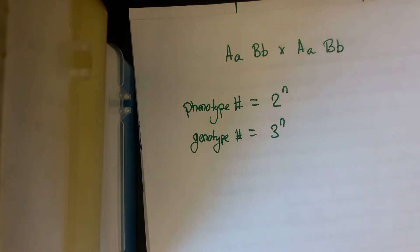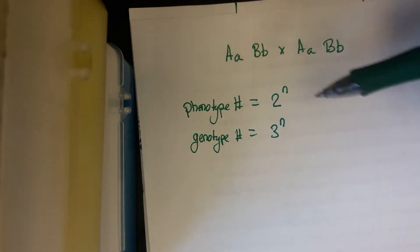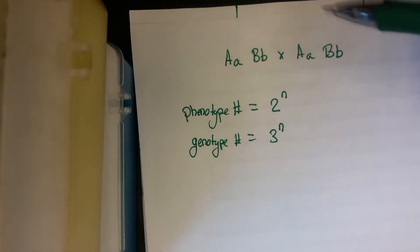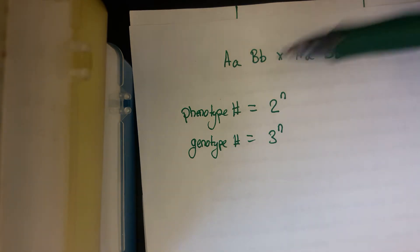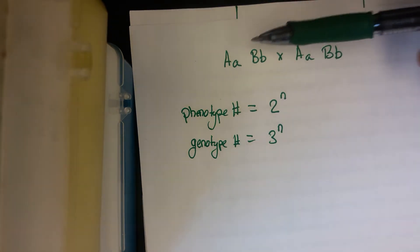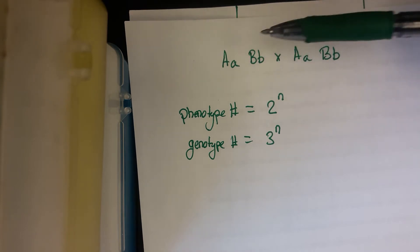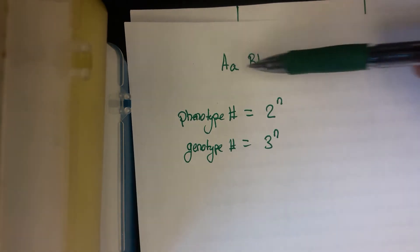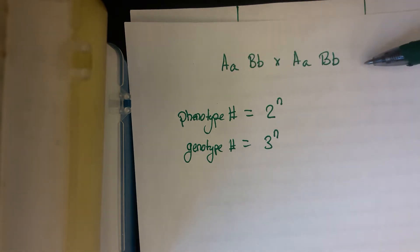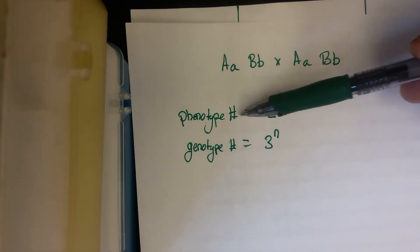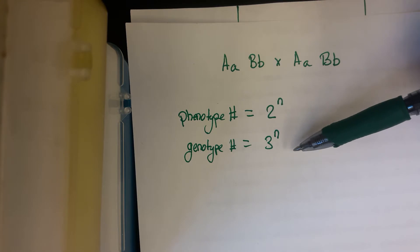All right, so this is going to be a quick video on altering this formula, which you guys have probably seen before. So first I'll explain what this formula does. Let's say there's a question that gives you a cross. So here we have a dihybrid cross between two loci that are heterozygotes at every loci.